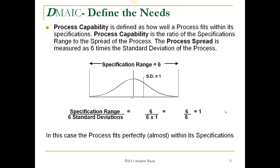Process capability is defined as how well a process fits within its specifications. It is a ratio of the specification range to the spread of the process, where the process spread is measured as six times the standard deviation. In this example, the specification range is 6 and the standard deviation is 1, so six times the standard deviation equals 6, and 6 divided by 6 equals 1 — a nearly perfect fit within the specifications.